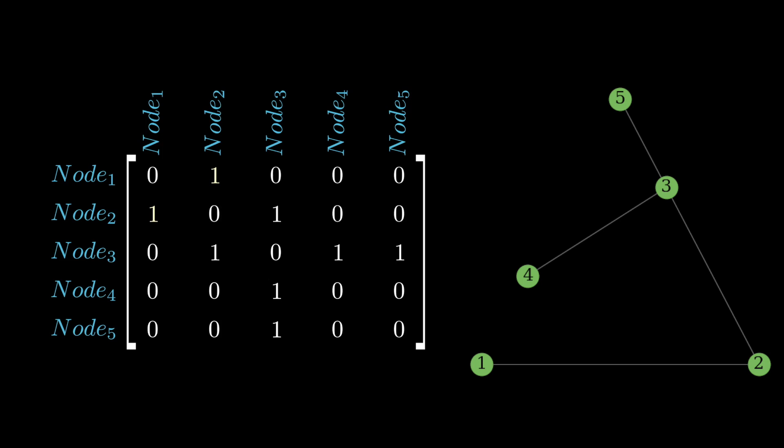You might notice a couple things when you look at this matrix. The first is that the last two rows are identical. This makes some sense, because there's no real way to tell these two nodes apart from the perspective of graph structure. They play the same role. You also might notice that this matrix is symmetric, meaning that if you reverse the rows and columns, such that the first row becomes the first column, the result is identical.